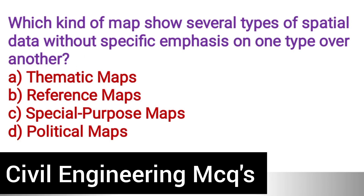Next question: Which kind of map shows several types of spatial data without specific emphasis on one type over another? Option A: Thematic maps. Option B: Reference maps. Option C: Special purpose maps. Option D: Political maps. The correct answer is option B, reference maps.